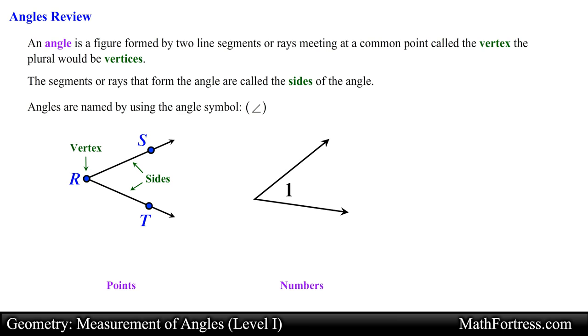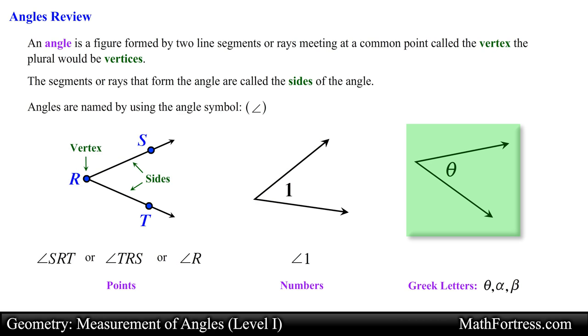Another common way to name angles is by using Greek letters such as beta, alpha, or theta instead of numbers. For example the following angle can be denoted as angle SRT or angle TRS or angle R or angle 1 or theta.